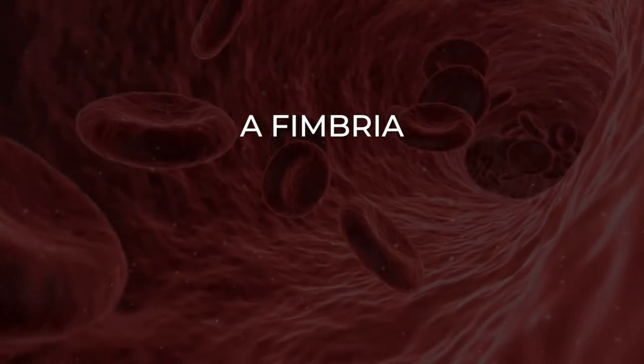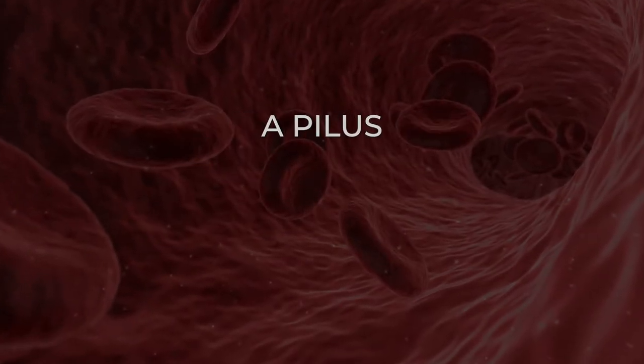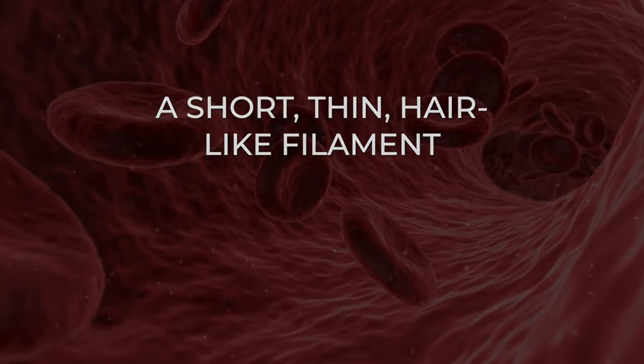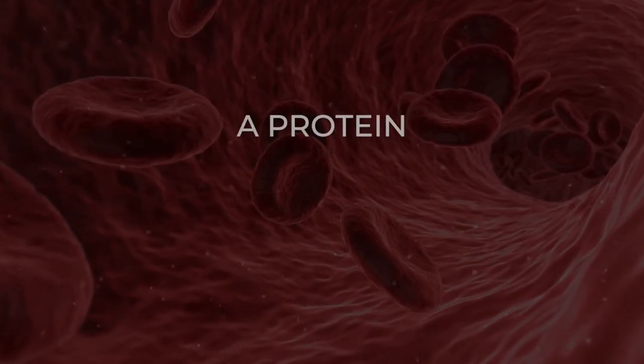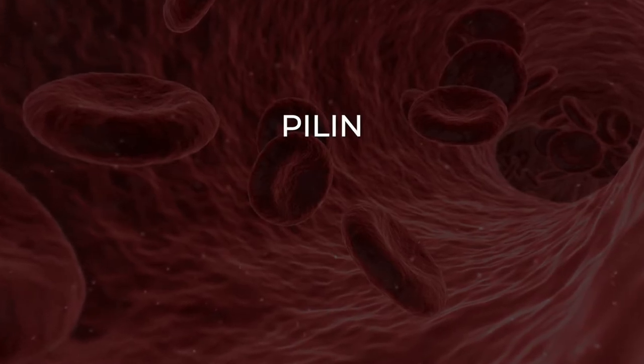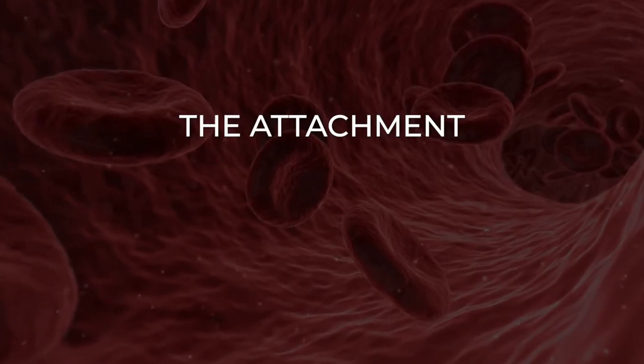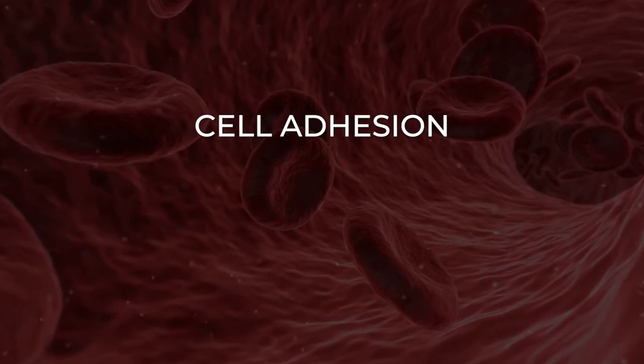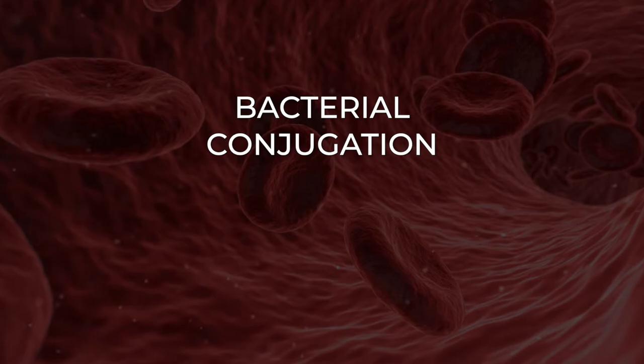A fimbria, plural fimbriae, also known as a pilus, plural pili, is a short, thin, hair-like filament found on the surface of bacteria. Fimbriae are formed of a protein called pilin, antigenic, and are responsible for the attachment of bacteria to specific receptors on human cells, cell adhesion. There are special types of pili involved in bacterial conjugation.